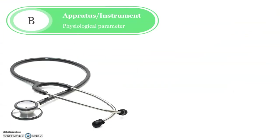Dear students, whenever you write the spotting answer, remember the mark distribution. As per the examination pattern — whether university or institutional — if you only identify the spot, you get one mark. If you identify the spot and write a description, you get two marks. So think about the mark distribution first, then identify the spot and write the description. In your description, include any related points: the use, the parts, where it is used, and its function. This is sufficient for any examination.